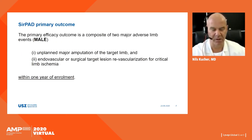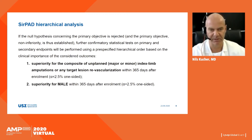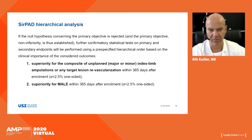For the first time, SIRPAD will assess an important primary efficacy outcome: a composite of two major adverse limb events — the MALE outcome — comprising unplanned major amputation of the target limb and endovascular or surgical target lesion revascularization for critical limb ischemia within one year of enrollment. SIRPAD also has a hierarchical analysis: first showing superiority for the composite of unplanned amputations and any target lesion revascularization, and if shown, then testing superiority for the MALE outcome within one year.